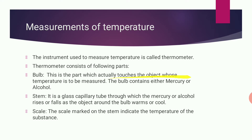The bulb is the part which touches the object. Suppose if you want to take the temperature of a body, the bulb will touch the body. The stem is a glass capillary tube through which the mercury or alcohol rises or falls as the object around the bulb heats or cools. The scale is marked on the stem to indicate the temperature of the substance.